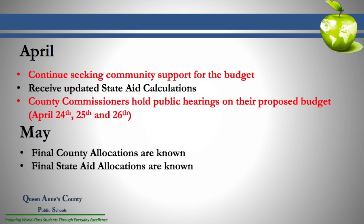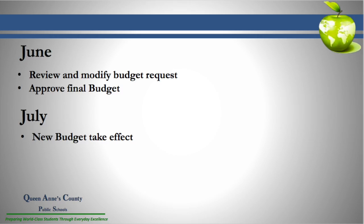Those county commissioner hearings are another opportunity for the public to speak in support of our budget. In May, the county commissioners generally finalize their budget. We'll know our final allocations from the county and get our final calculations from the state — we'll know exactly what our revenues look like. Then the fun begins in June, when we go back and revise our budget request to match those revenues. We must have a balanced budget approved by the end of June, and then in July the new budget takes effect.